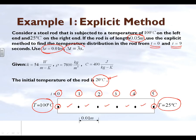We are taking a delta t of 3 seconds. Since we are trying to find the temperature between 0 and 9 seconds, we will start at 0, find the temperature at 3 seconds, use that to find the temperature at 6 seconds, and then use that to find the temperature at 9 seconds.